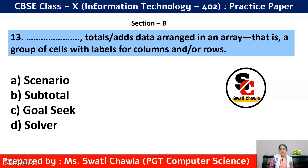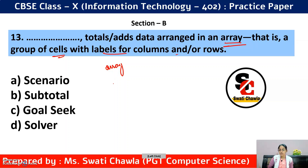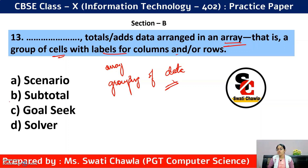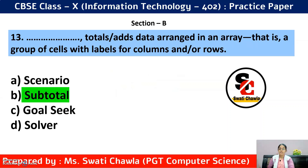Question 13: Dash totals or adds data arranged in an array — that is, a group of cells with labels for columns and rows. If you want to group data and get totals, the correct answer is option B — Subtotal.